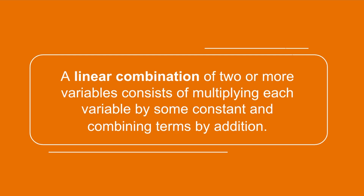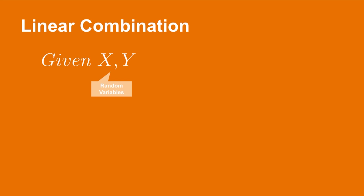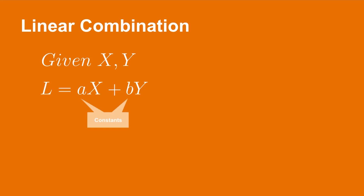We are going to restrict ourselves to linear combinations of random variables. A linear combination of two or more variables consists of multiplying each variable by some constant and then combining those terms by addition. Since these constants can be positive or negative, it is possible to have addition or subtraction of variables. Given two random variables X and Y, we can construct a linear combination L. It is assumed throughout this video that these random variables are independent of one another — all the formulas to follow hold only if this is true. The linear combination L is equal to a times X plus b times Y, where a and b are constants which can be either positive or negative.